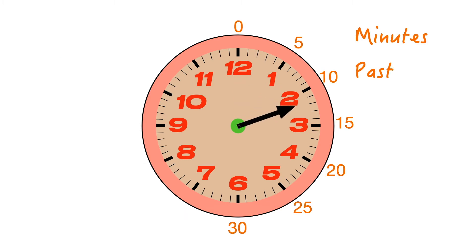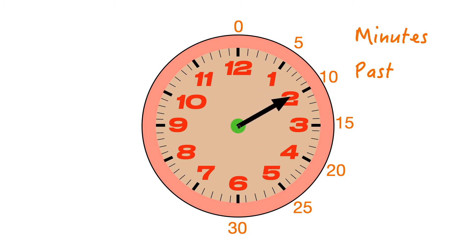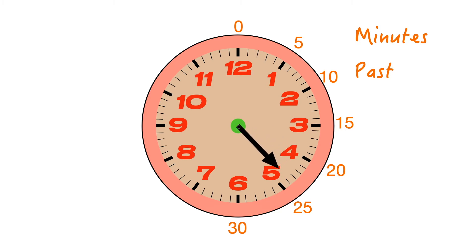One, two, three, four, five. So when we reach the 2, the 2 actually represents 10 minutes past the hour. 15 minutes past. 20, 25, 30 minutes past.